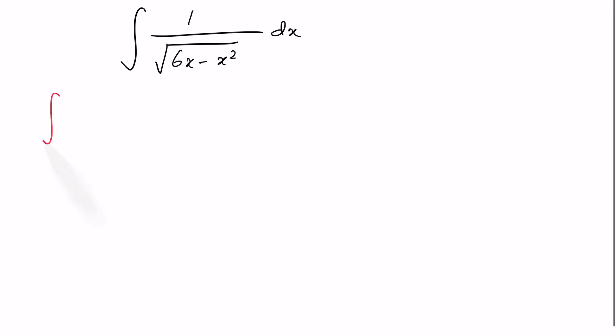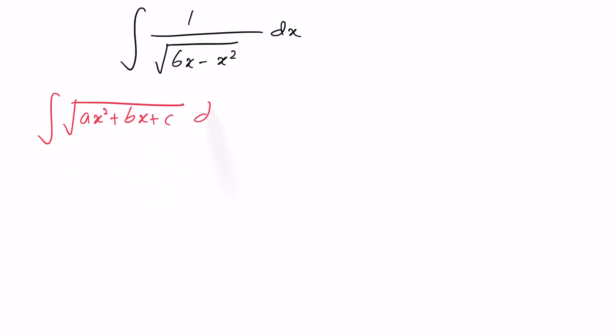Yesterday we saw how to evaluate integrals of the form square root of (ax² + bx + c) dx. We classified that integral into four cases based on whether the discriminant delta (b² minus 4ac) is positive, negative, or equal to zero, along with whether the coefficient of x², a, is positive or negative. I also mentioned that the substitutions selected for each of those four cases apply equally when evaluating integrals of the form 1 over square root of (ax² + bx + c) dx.